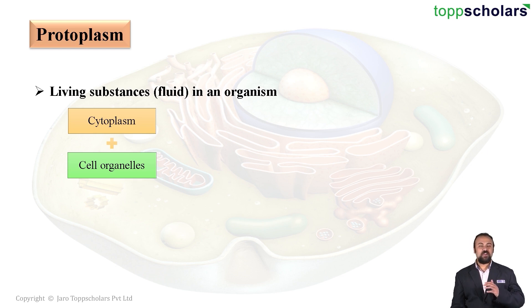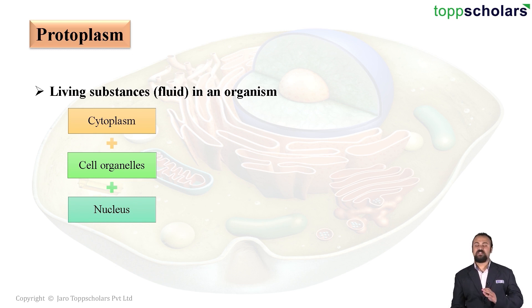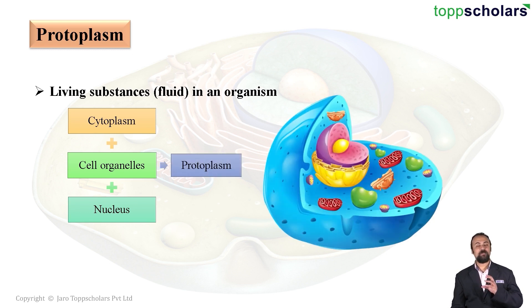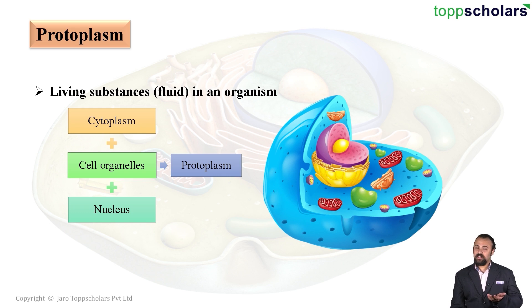Other than this, we have a centrally located nucleus. So students, the cytoplasm, all the cell organelles, and the nucleus together constitute the protoplasm. Now, can you think of something which is missing here? Yes — we haven't said anything about the cell membrane or the cell wall.